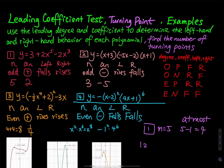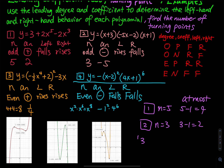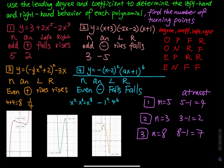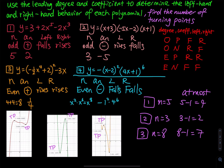For number 3, the highest degree is 8, so n equals 8, and 8 minus 1 equals 7 turning points at most. Looking at the first graph, we have two turning points — one here and one here. The next graph has two as well. The third graph has three turning points visible.